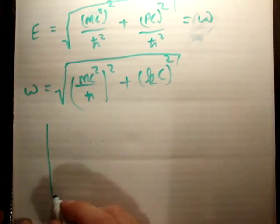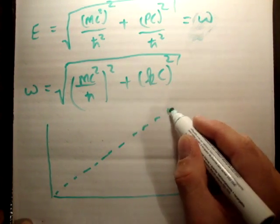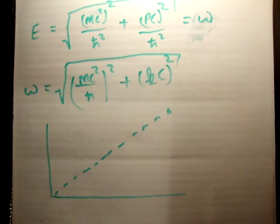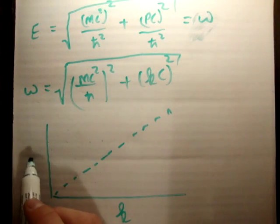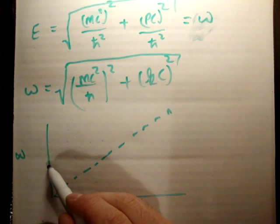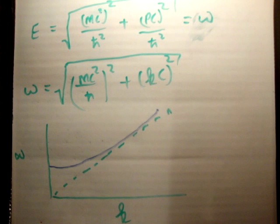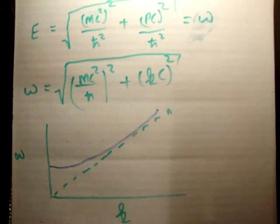If you plot the dispersion relation with wave number k on the horizontal axis and angular frequency ω on the vertical axis, particles with mass follow a curved line, while the dotted line shows particles with zero mass. Now we're going to go ahead and prove Schrödinger's equation.